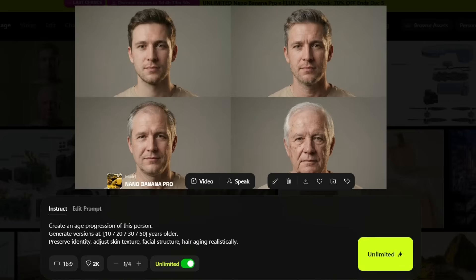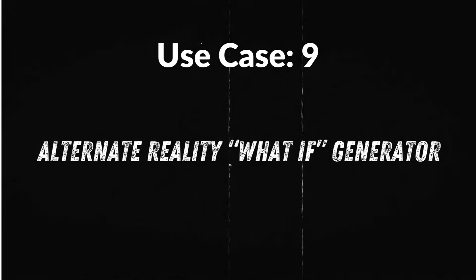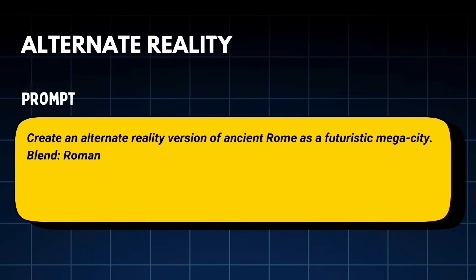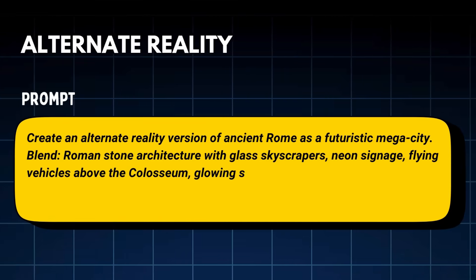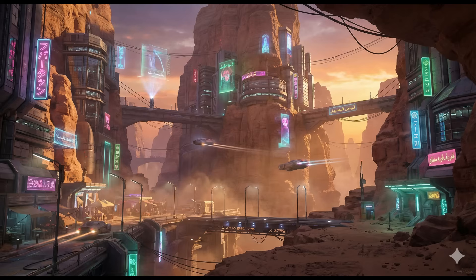Use case 9: Alternate reality 'what if' generator. With the prompt 'Create an alternate reality version of ancient Rome as a futuristic megacity,' you get a result where you can recognize ancient Rome instantly, yet everything is wrapped in futuristic technology — world-building at cinematic scale. Another prompt: 'Create an alternate reality cyberpunk city built inside a vast desert canyon.' The contrast is insane: hot desert rock, cold futuristic neon, and floating vehicles.